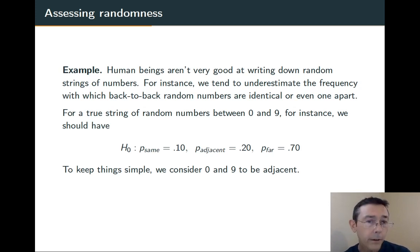So from the perspective of significance testing, if we have a long string of digits between 0 and 9, if they're truly random, this will be our null hypothesis, then the probability that back-to-back digits will be the same is 1 in 10. And the probability that they'll differ by exactly 1 is 2 in 10.